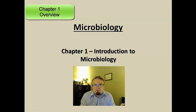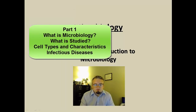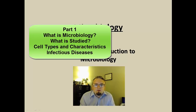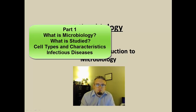We're going to do it in two parts. In part 1, we're going to take a look at some general characteristics, such as what is microbiology, what is studied in microbiology. We're going to be talking about some of the cell types that exist on Earth and their characteristics. We're then going to finish up part 1 with an overview of infectious diseases, with some examples of different areas of the body that microbes are well known to infect.